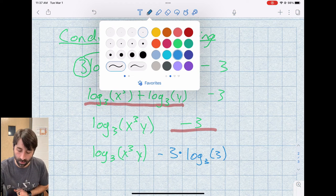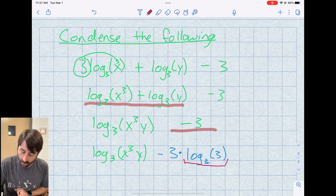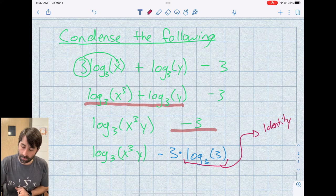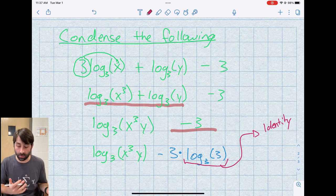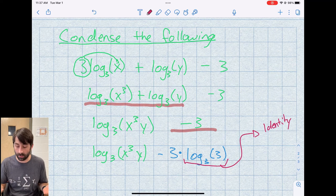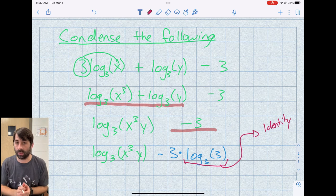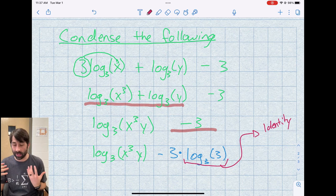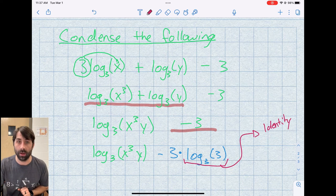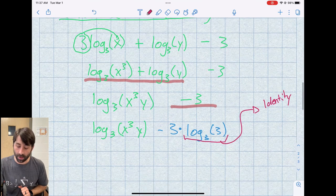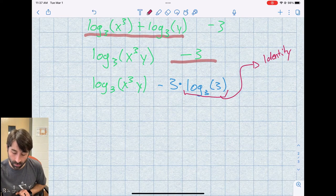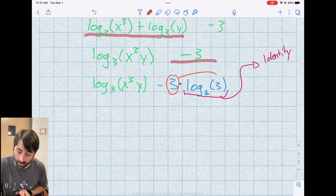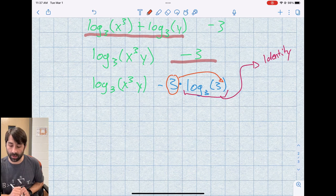Now this part, log base 3 of 3 just equals 1. So 3 times 1 is 3. So we haven't changed the value of this expression at all. I've basically just multiplied that last term by 1. And I'm just choosing kind of an elegant and sophisticated way of writing 1. Now why this is useful is because I can take this 3 and now I can apply the power rule and I can write that as an exponent.